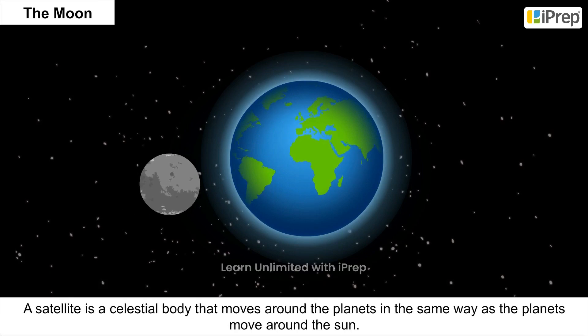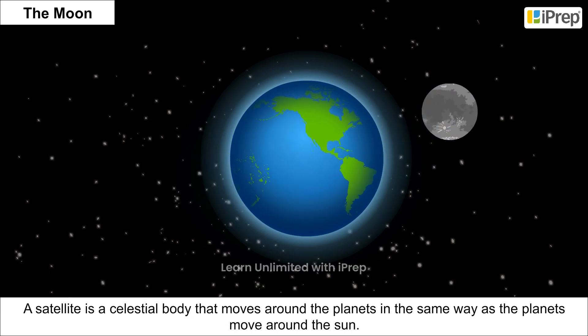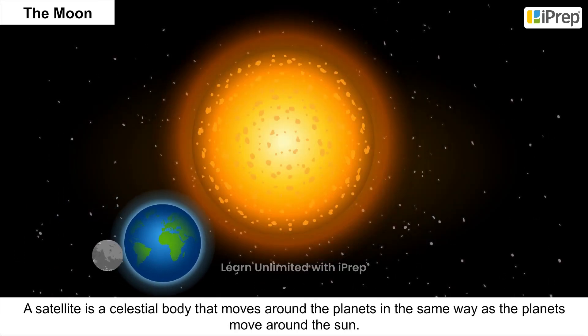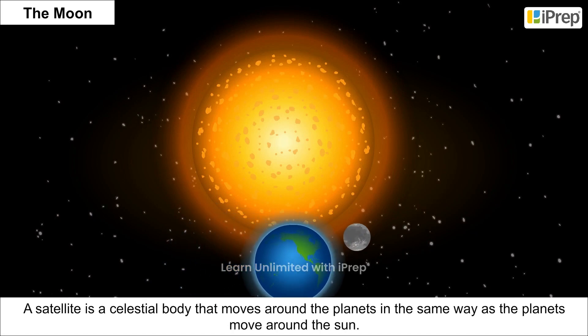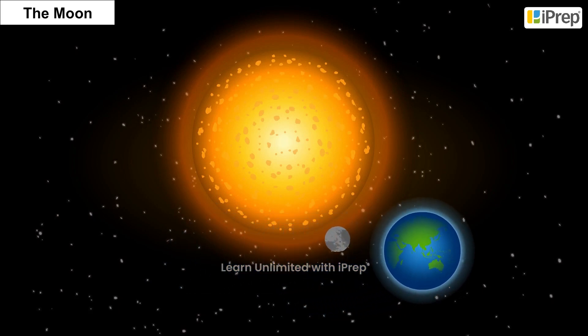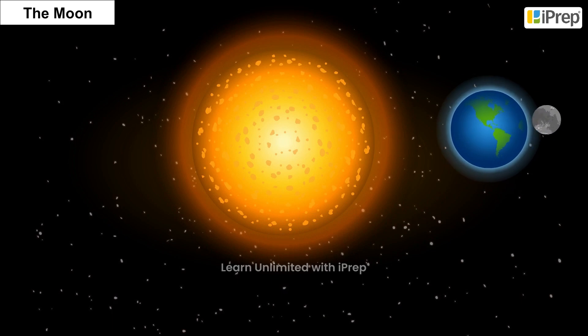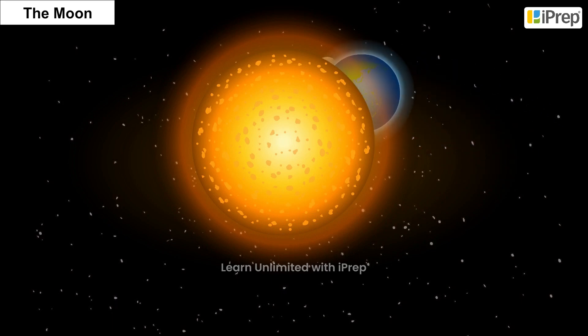A satellite is a celestial body that moves around the planets in the same way as the planets move around the Sun. The Moon appears so big because it is nearer to our planet than other celestial bodies.